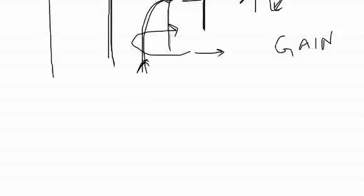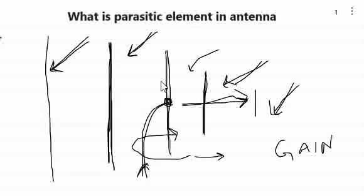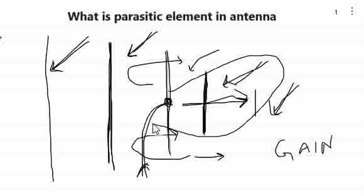If we go back, if the length of the parasitic element is more than the center dipole, there will be reflection. When the length of this element is less than the center dipole, there will be more of directivity.